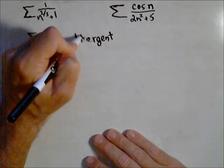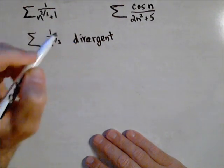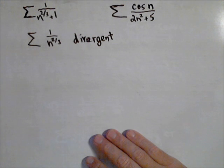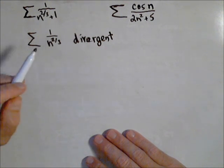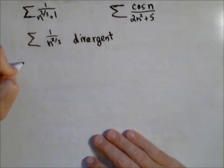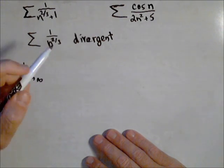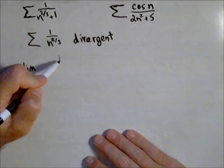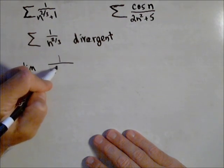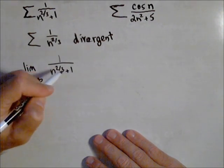So if I'm using the limit comparison test and I get a constant, I know that they both diverge. So with the way this is set up, we do the limit as n goes to infinity. Again, it doesn't matter which one I put on top. I'm gonna put the given one on top, so 1/(n^(2/3) + 1).